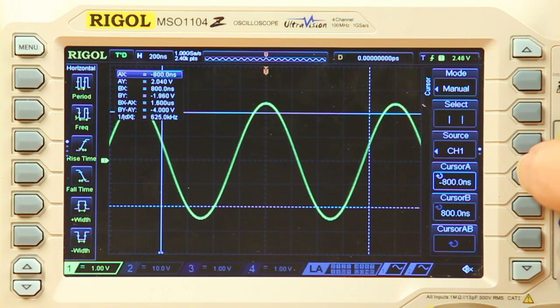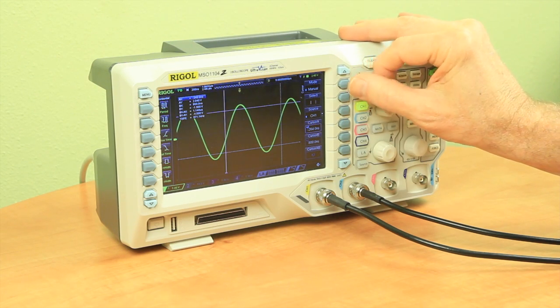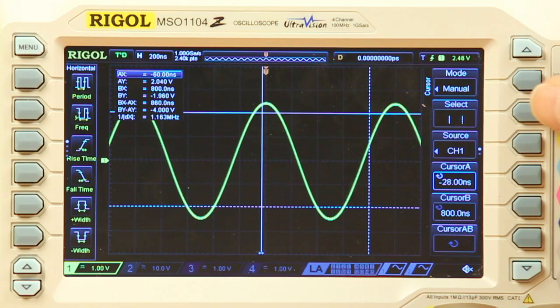Here we have cursor A, currently at 800 ns. And we can change that now that it's highlighted. For example, we can bring it over to the peak of our sine wave.